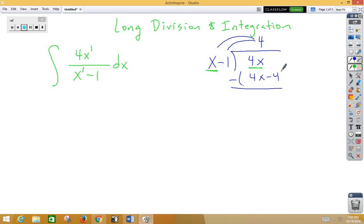Subtract. We need to distribute our negative just like we learned in algebra 2. Our remainder will be 4 as these terms cancel out. We write our remainder as a fraction, so plus 4 over our divisor of x minus 1.